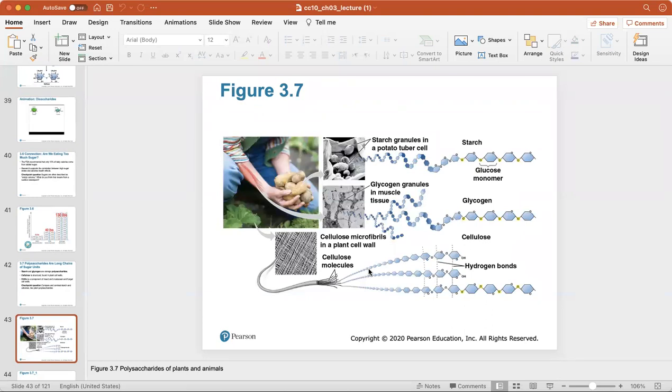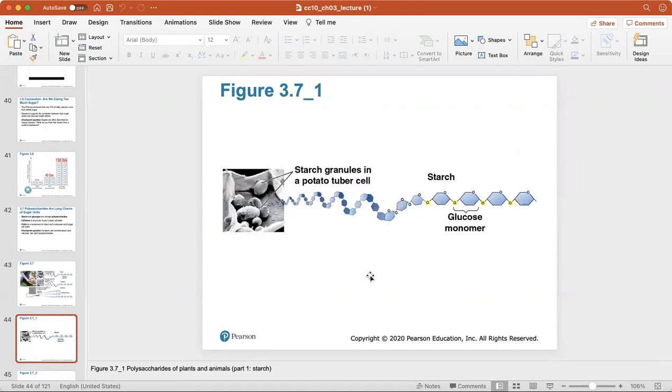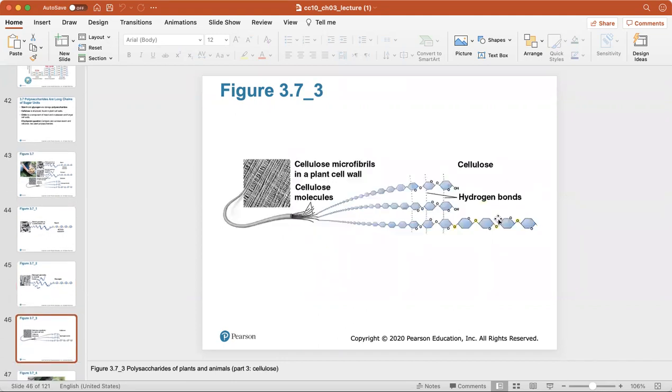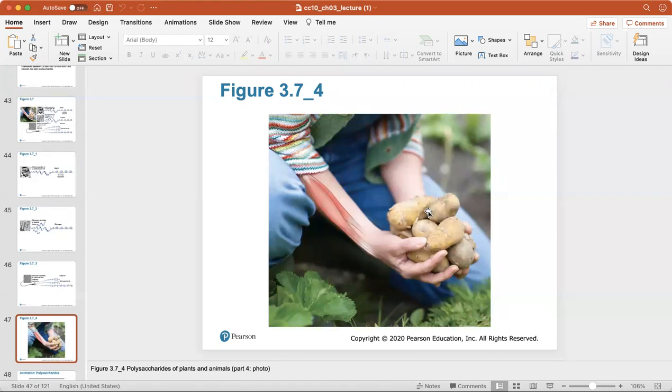Here's a look at the polysaccharides of plants and animals, looking at starch, glycogen, and cellulose which is found in the plant cell wall. The starch granules in a potato tuber cell, and you can see the starch here in the glucose monomer. Here are glycogen granules found in muscle tissue. There's slight differences between how they're storing glucose. Here are the cellulose microfibrils in a plant cell wall. You can see how they make strands of cellulose bonded together with hydrogen bonds. This is a look at polysaccharides of plants and animals, looking at the potato, the plant, and your muscles.